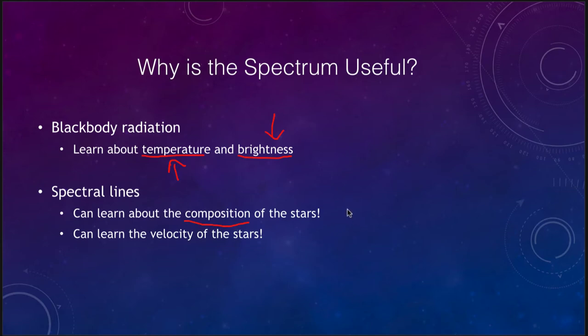But when we actually get the spectrum, we can learn things about the composition — what stars are made of. We can learn how the stars are moving, and more. How do we find out what a star is made of when we can't go get a sample of it and bring it back to the laboratory? Well, we use its spectrum to be able to determine that.